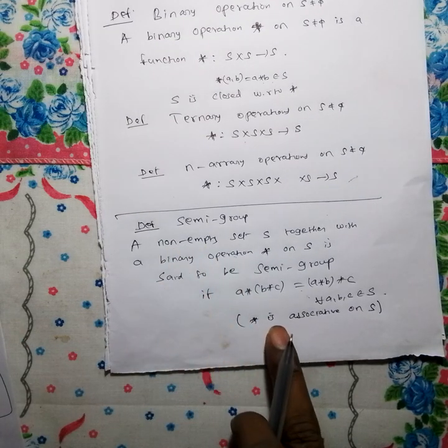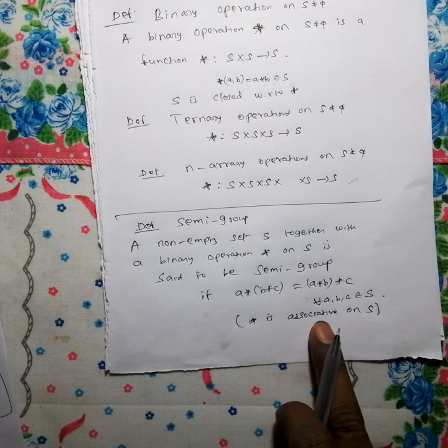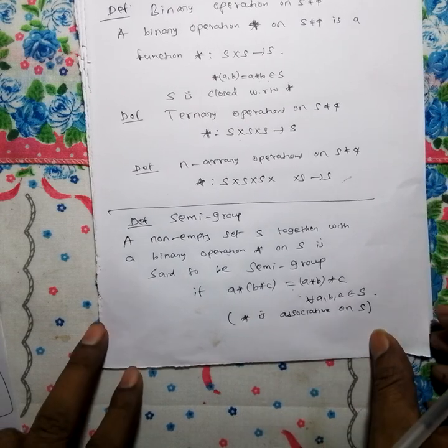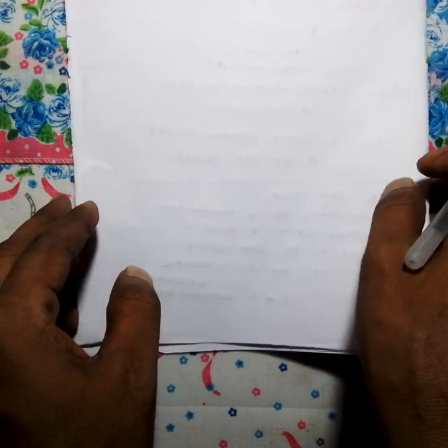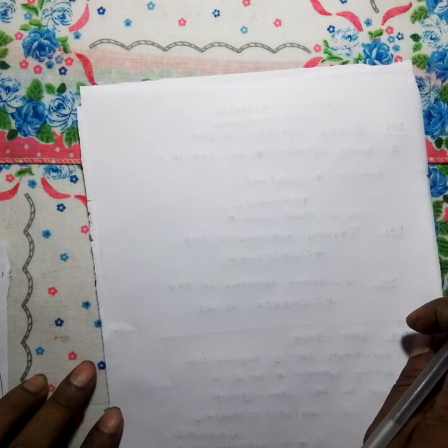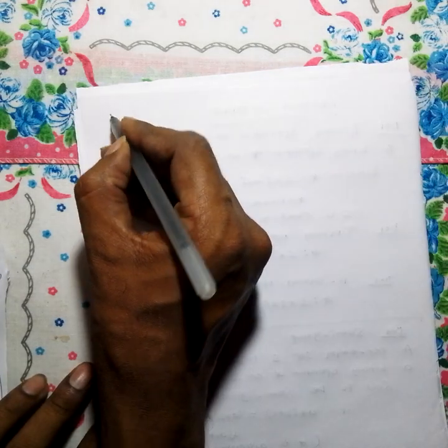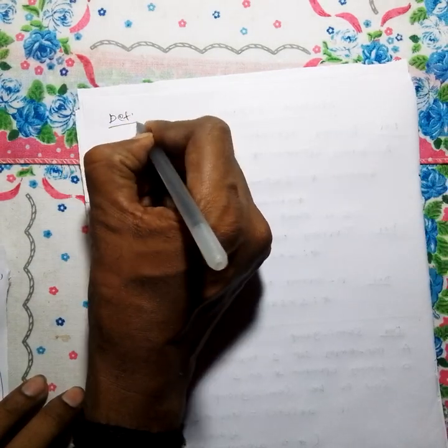So, if a non-empty set has a binary operation satisfying the associative property, that non-empty set with the binary operation is called a semigroup. Now this is our definition.